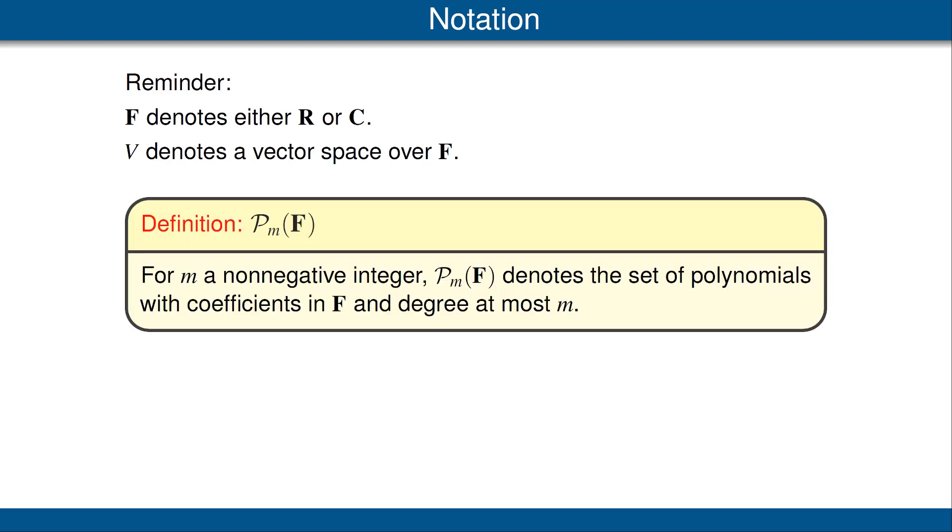We now introduce a new vector space, which will be useful for future examples. For a non-negative integer m, let P_m denote the set of polynomials with coefficients in F and degree at most m. Let's look at some examples. Our first polynomial is 2x³ - 7x + 5. This polynomial has real coefficients and it has degree 3, thus it is in P₃(R). This polynomial is also in P₅(R) because it has degree less than or equal to 5.